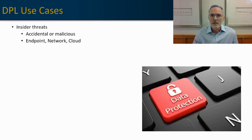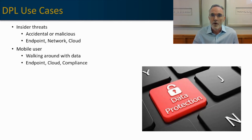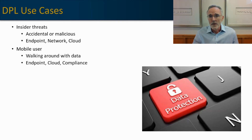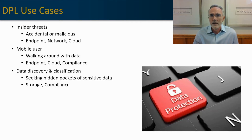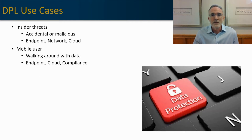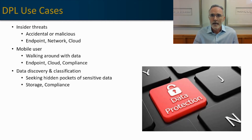The next prevalent use case is the mobile user — people who are walking around with data in their pockets, briefcases, or purses, subject to data loss should those devices become misplaced. The categories that address that use case include endpoint, cloud, and compliance. The third use case is data discovery and classification: understanding where your data resides and what type of sensitivities your data has at each point within your organization. For that, we look at the storage and compliance categories.